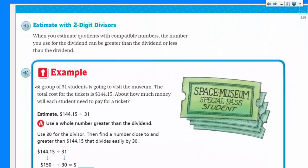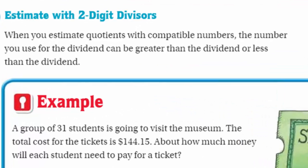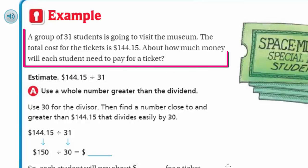Now we have estimate with two digit divisors. When you estimate quotients with compatible numbers, the number you use for the dividend can be greater than the dividend or less than the dividend. Example: a group of 31 students is going to visit the museum. The total cost for the tickets is $144.15. About how much money will each student need to pay for a ticket?